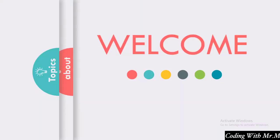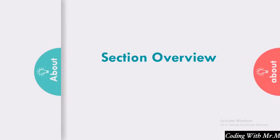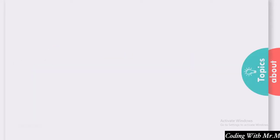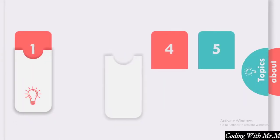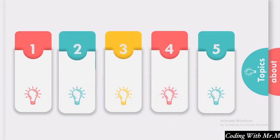Welcome to another section on this Django course. In this tutorial we are going to be covering the section overview. In this section we are going to be covering five important topics. Starting with the first topic, we are going to cover the registration field — we are going to create a registration field at the top of our website. The second part deals with the registration of users, so we are going to register users so that they can be allowed to access, manipulate, or add data.